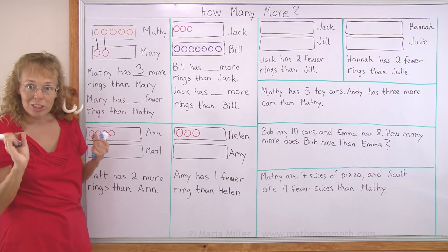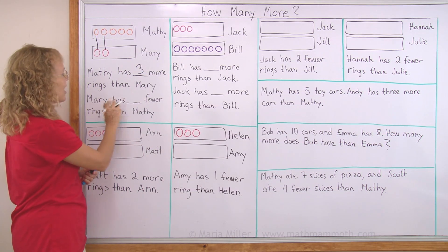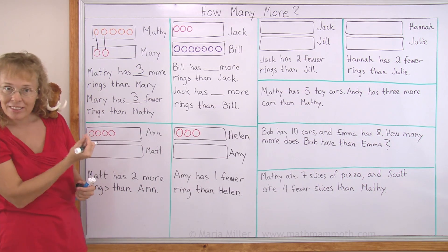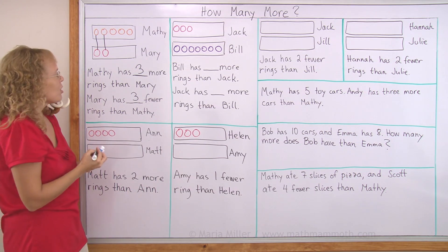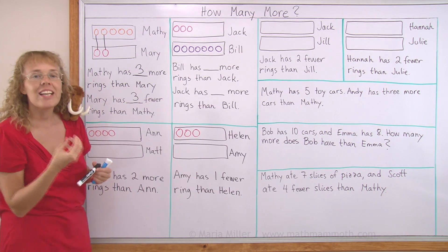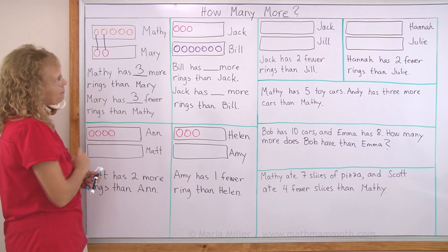We can also say that Mary has three fewer rings than Matthew. Or you might say Mary has three less rings than Matthew.